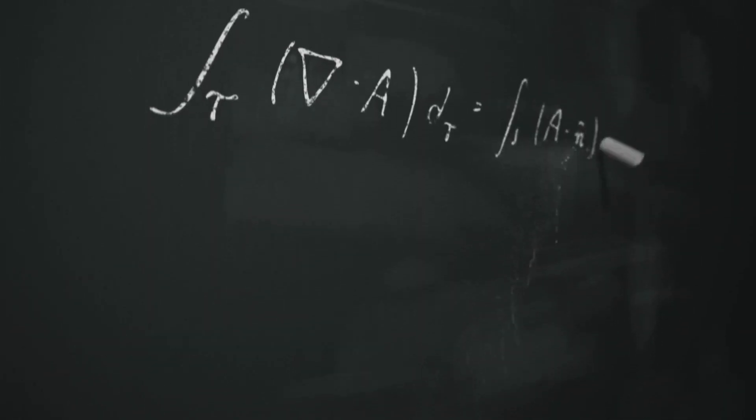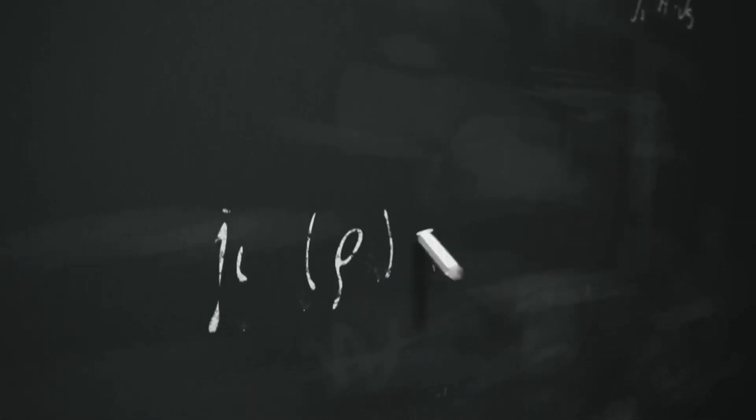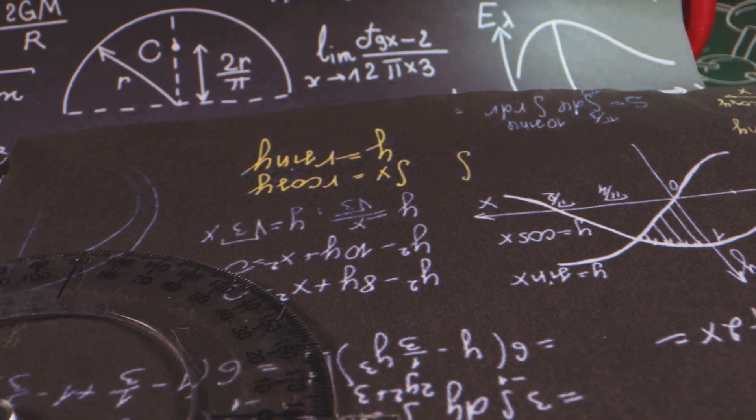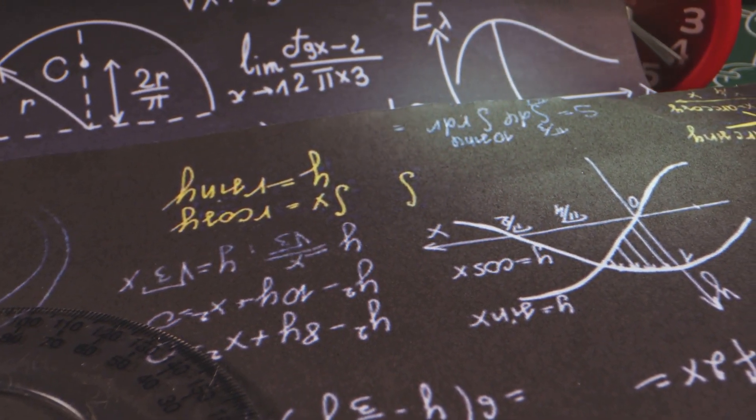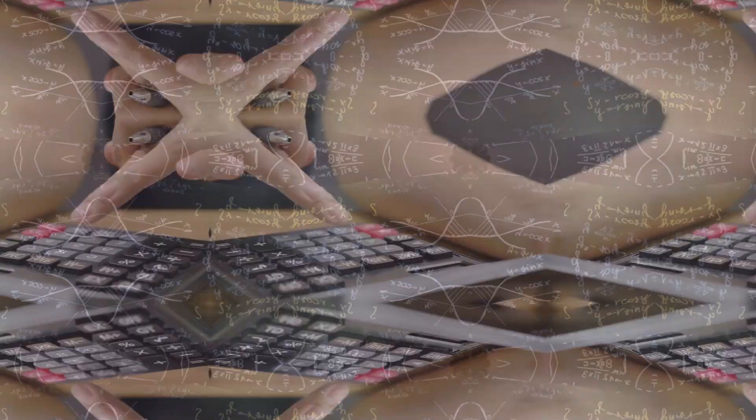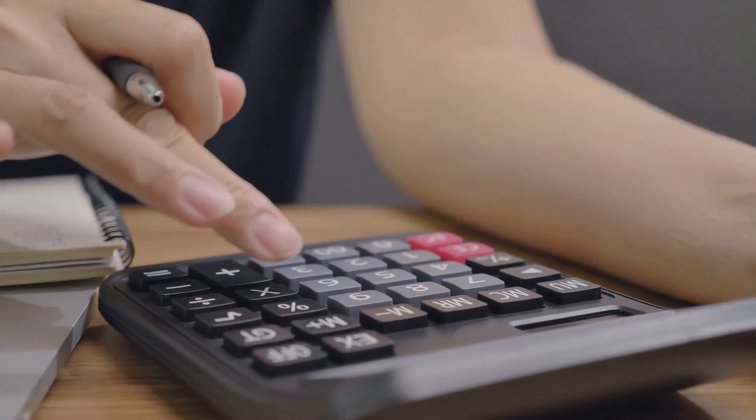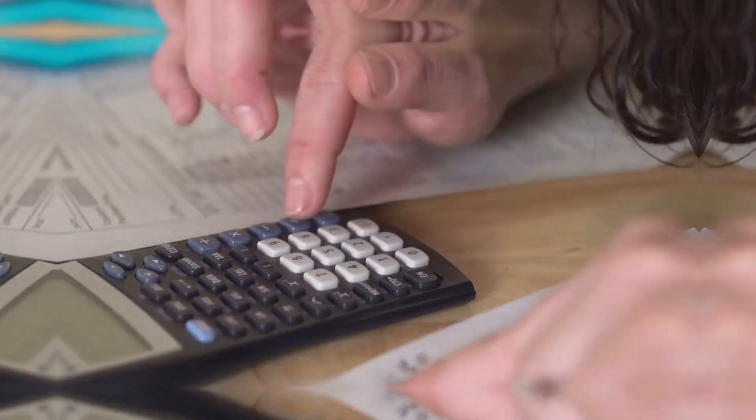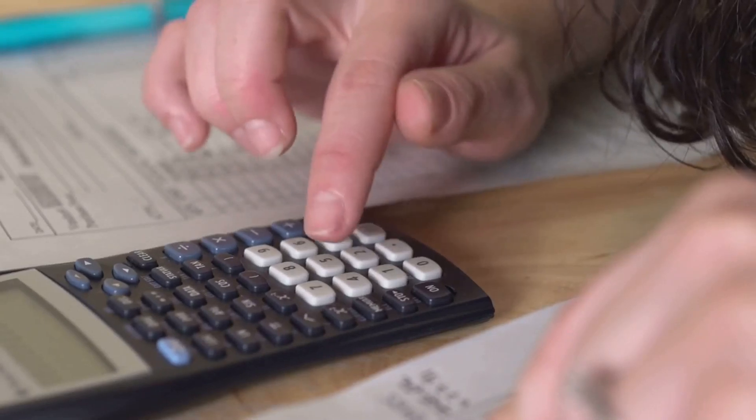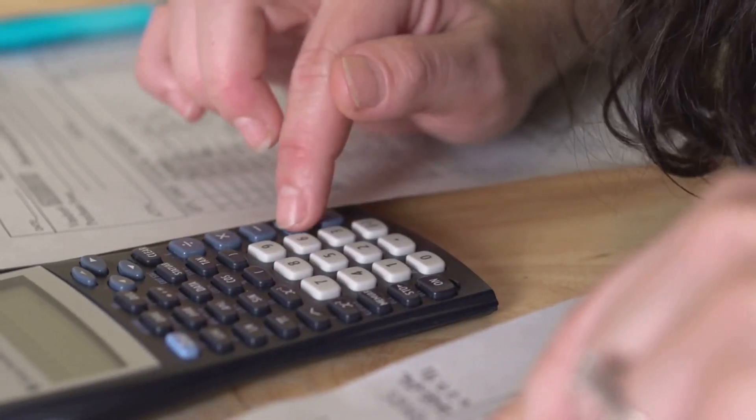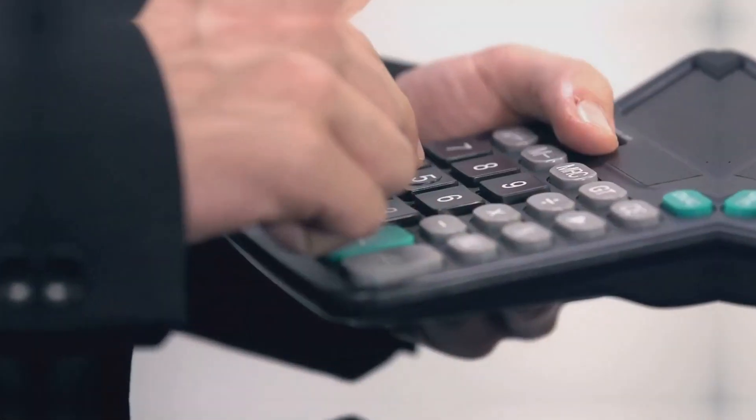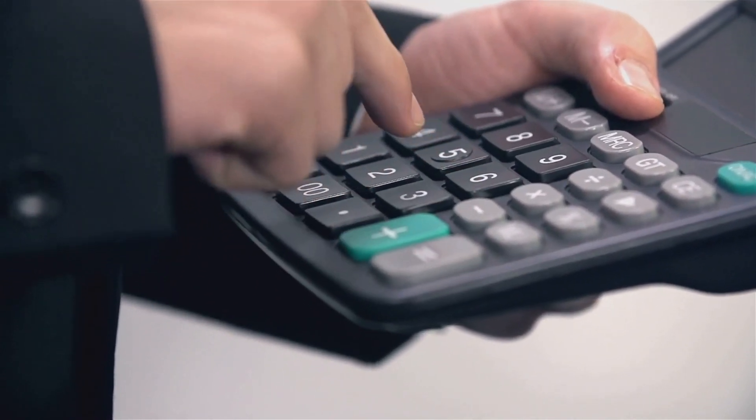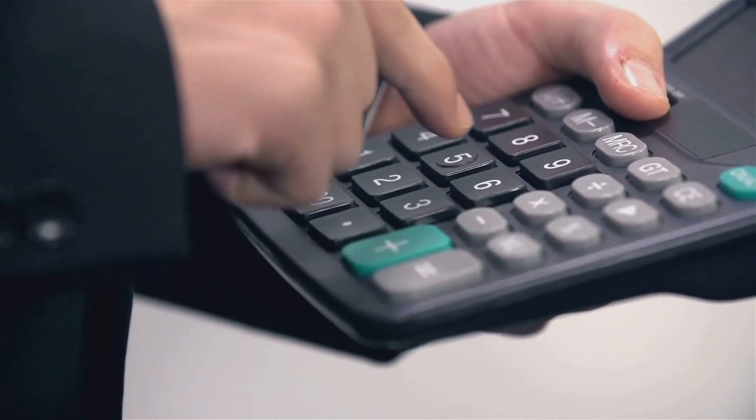To find the limit of a specific function, let's consider f(x) = (x² - 4) / (x - 2) as x approaches 2. First, we substitute values close to 2, such as 1.9 and 2.1. For f(1.9), we calculate (1.9² - 4) / (1.9 - 2) = -0.39 / -0.1, which equals 3.9.